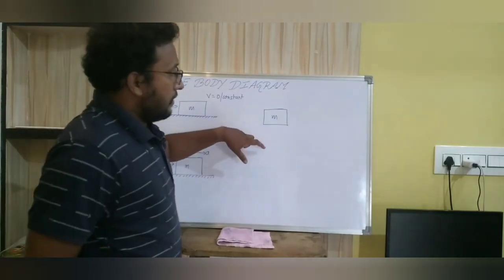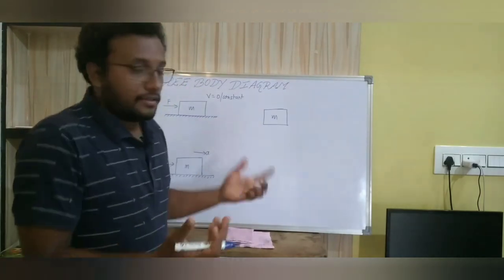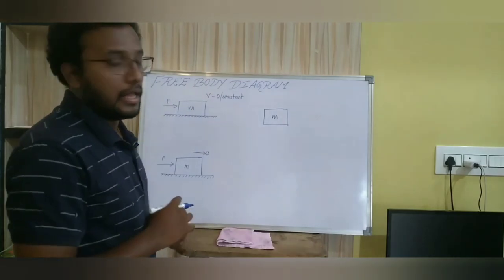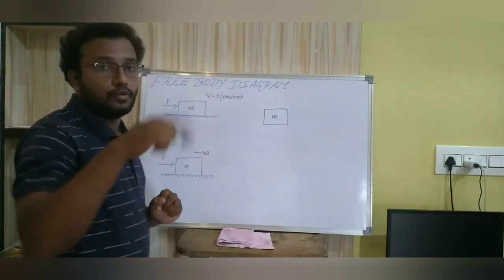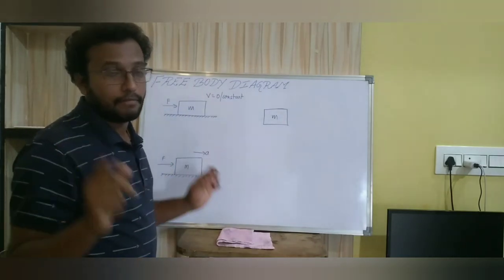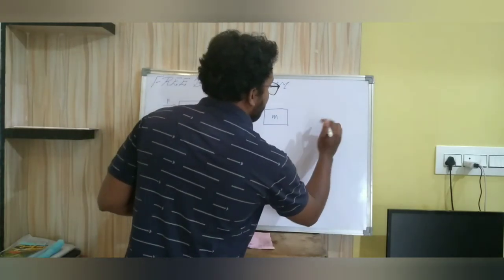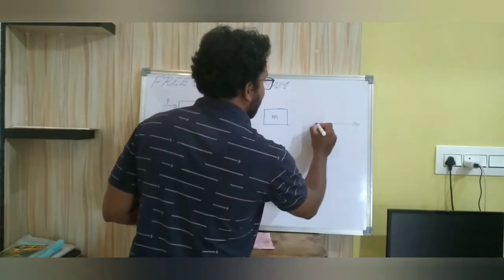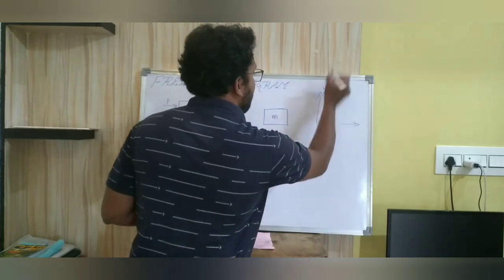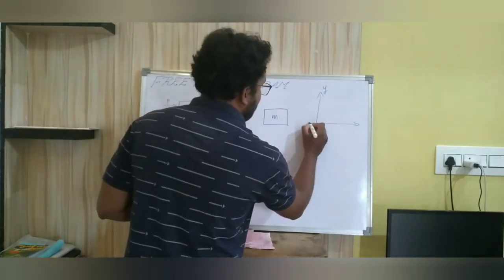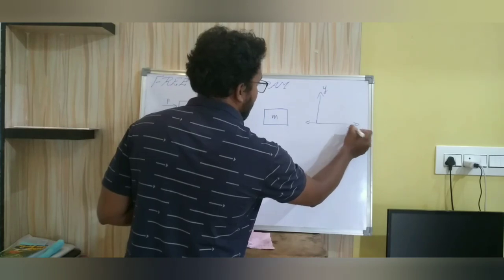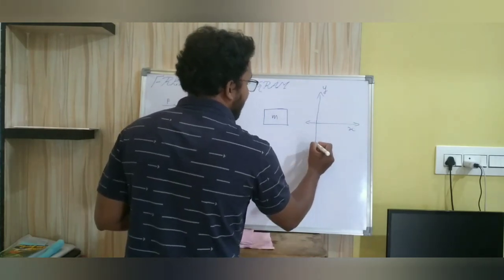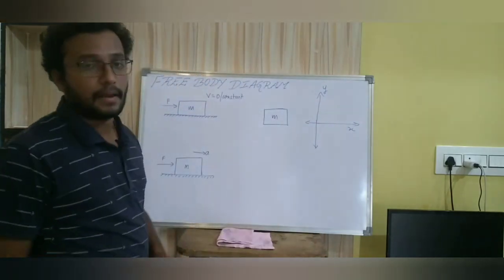Assume that this block of mass M is in the plane of the board. We take two coordinate axes, X and Y. As usual, this is the X axis and this is the Y axis. Both negative X axis and positive X axis will be there. Similarly, negative Y axis and positive Y axis will be there.